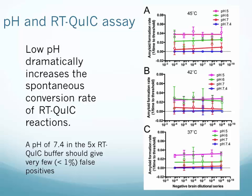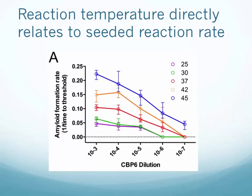As temperature decreases, you also decrease the spontaneous conversion rate caused by the lower pHs. Now let's take a look at what temperature does to a seeded reaction. Here we have a serial dilution of positive prion brain from 10 to the minus 3 through 10 to the minus 7, assayed at five different temperatures: 25, 30, 37, 42, and 45 degrees. At 45 degrees, you see the fastest reaction rate for any temperature tested, with an extra log of sensitivity compared to the other temperatures. At 42 and 37 degrees, there are intermittent reaction rates, and at 25 to 30, very low reaction rates. Between 37 and 42 degrees, the sensitivity is about the same, but the reaction rate is a little bit slower at 37 than 42, as you would expect.